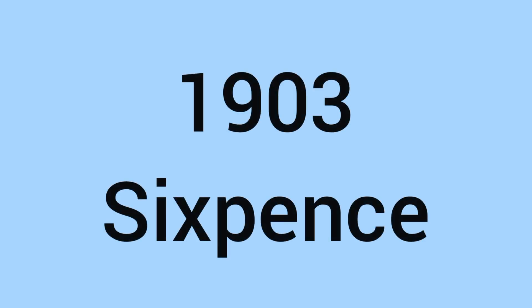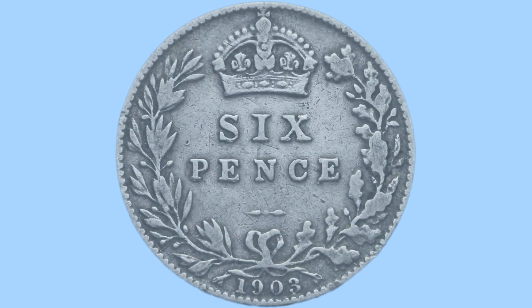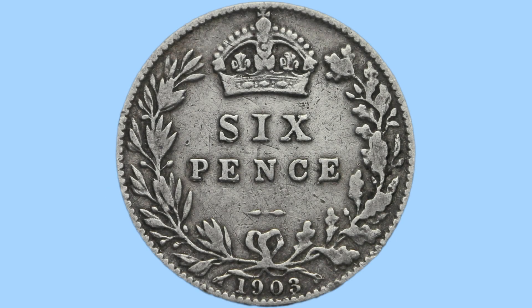Hello and welcome back to Bits and Bobs. Today's video is all about the 1903 sixpence piece from the reign of Edward VII. We will start with the design of the coin and then move on to the facts and figures.